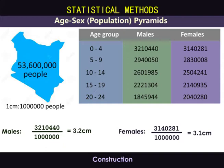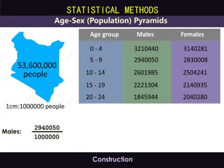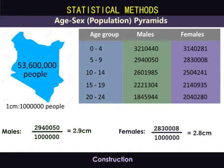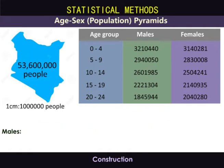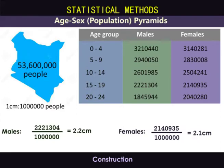Then we move to the next age group, 5 to 9 years. For the males, 2,940,050 divided by a million gives us 2.9 centimeters. Moving to 10 to 14 years, the males give us 2.6 centimeters and the females 2.5 centimeters. Next age group, 15 to 19 years: for the males, 2,221,304 divided by a million gives us 2.2 centimeters, and for the females 2.1 centimeters.